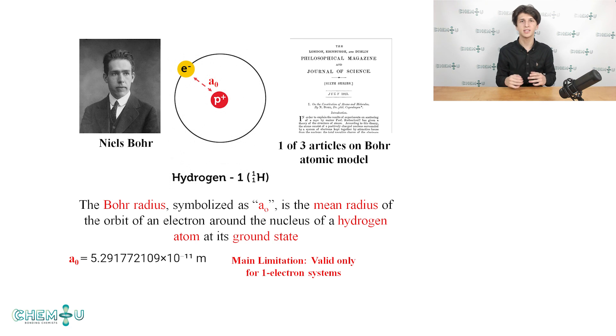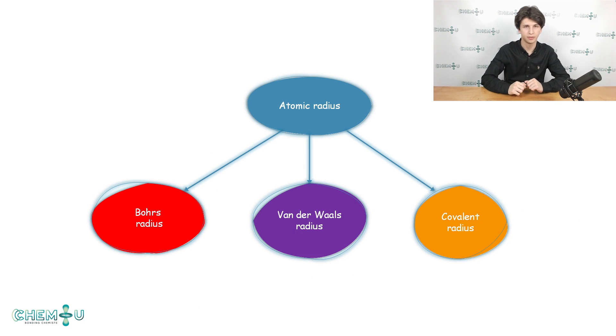The Bohr radius symbolized as a₀ is the mean radius of the orbit of an electron around the nucleus of a hydrogen atom at its ground state. It is a very important physical constant, and its value can be seen on the screen right now. Unfortunately, in chemistry we don't use it anymore for determining atomic radius. As I have mentioned before, the main limitation is that this radius is valid only for one electron systems, whereas organic molecules contain hundreds of them. Let's move on to more useful definitions.